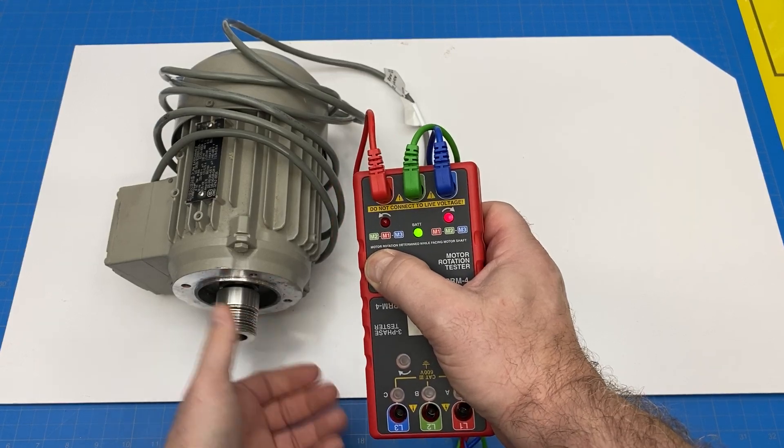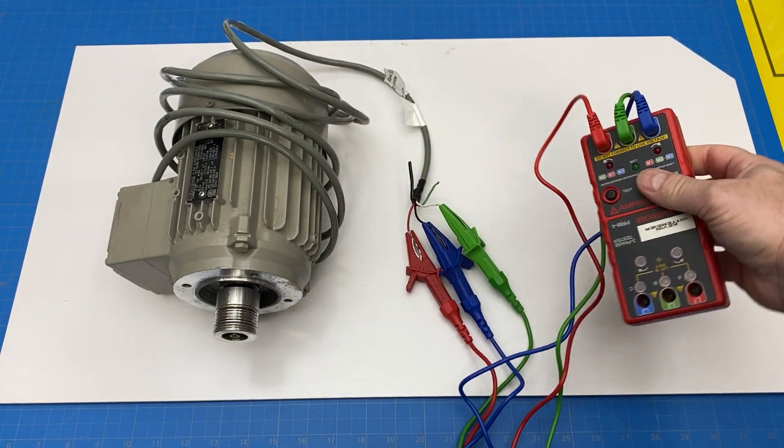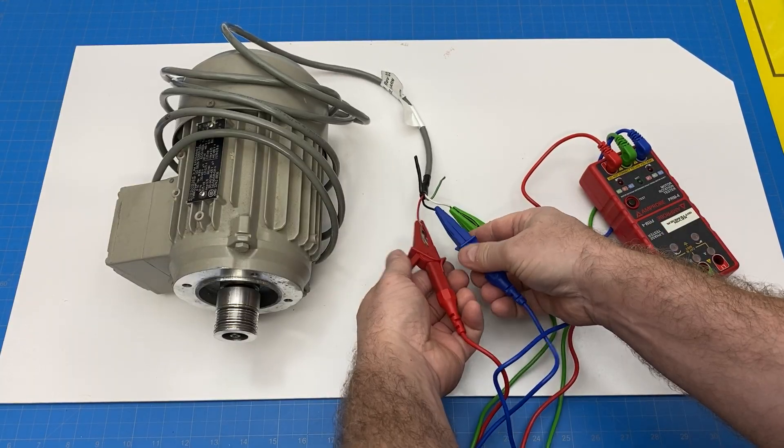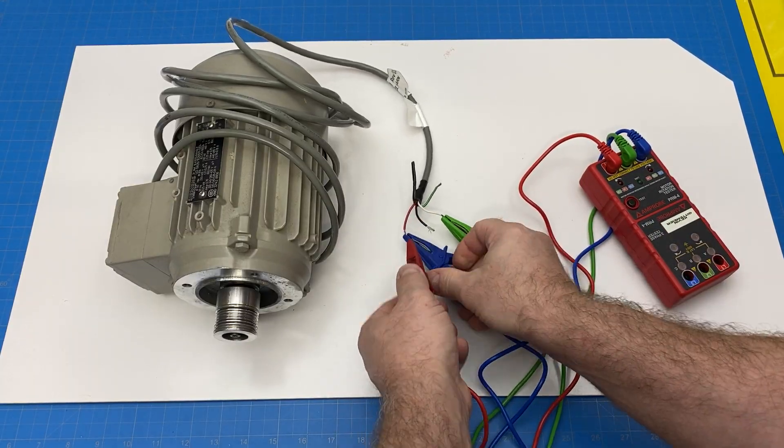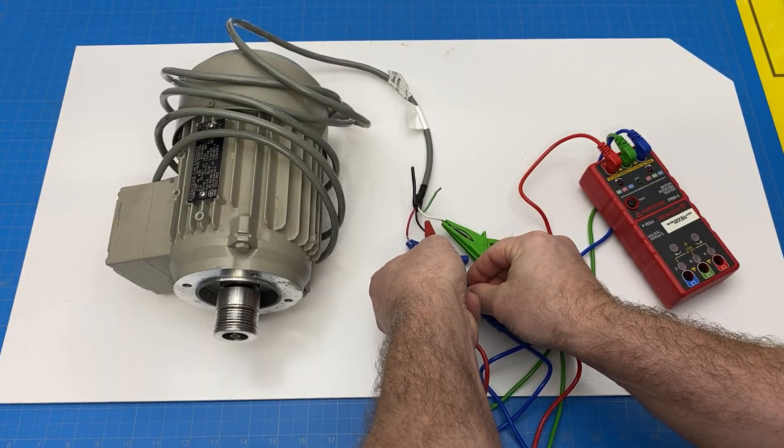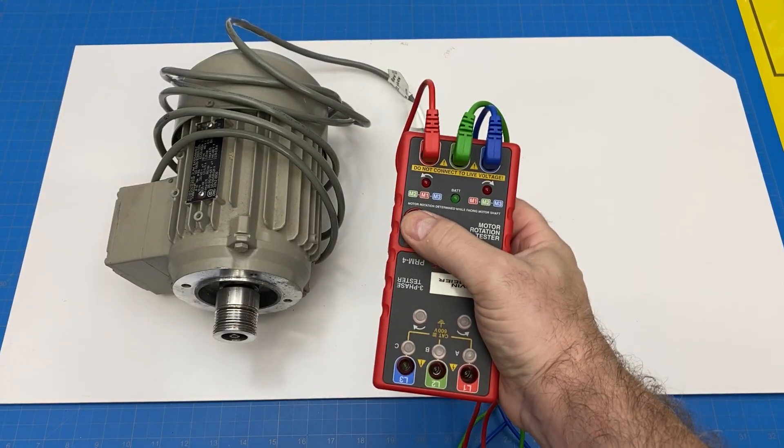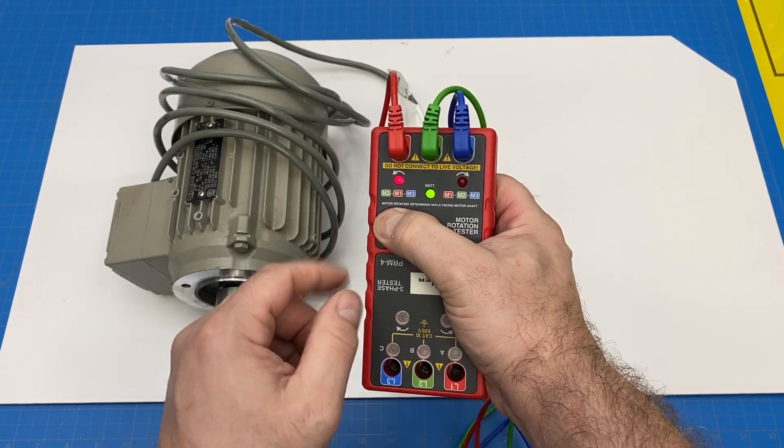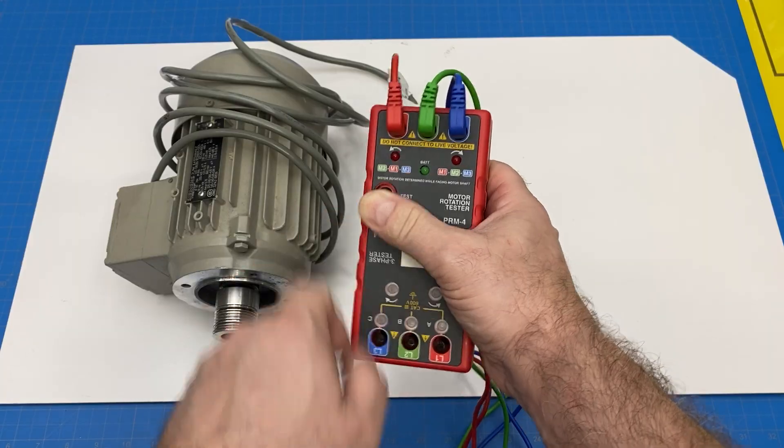If I swap these, you'll see it'll be backwards, so I can just change any two. And then now it'll be backwards, which it is. So when I turn clockwise I got a counterclockwise.